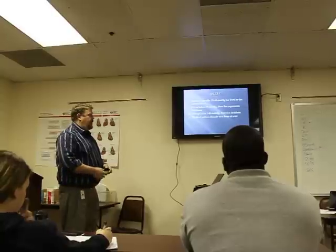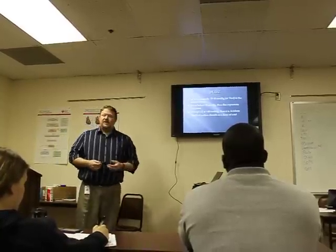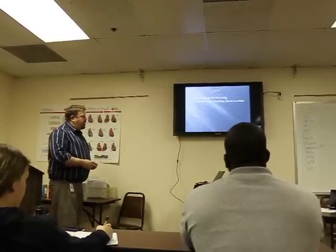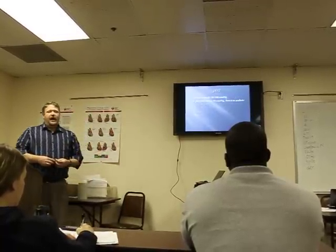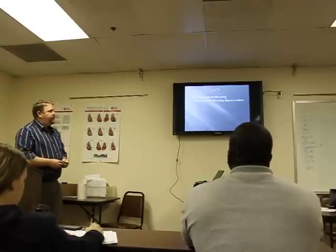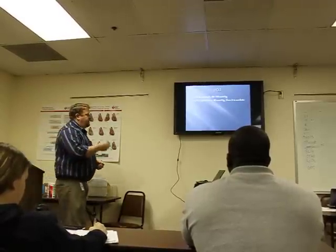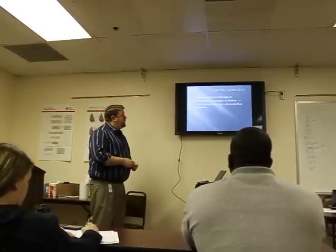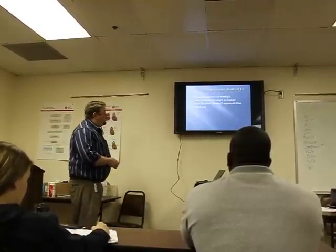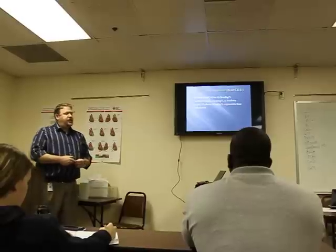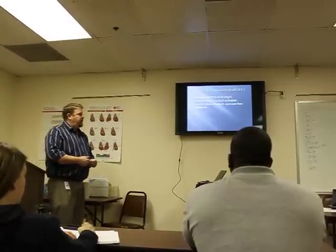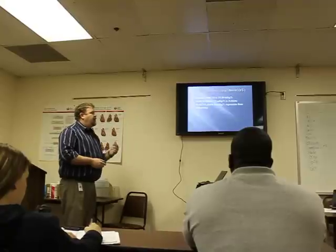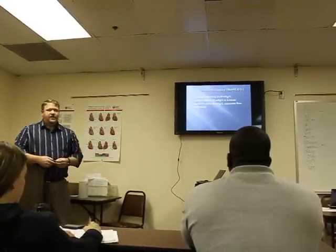Think of carbon dioxide as a form of acid. Partial pressure of O2 is normally 80 to 100 millimeters of mercury in arterial blood; if PO2 falls below 80, it is considered acidic. HCO3 is normally 22 to 26 milliequivalents per liter — falls below 22, it's acidic; above 26 represents alkalosis.